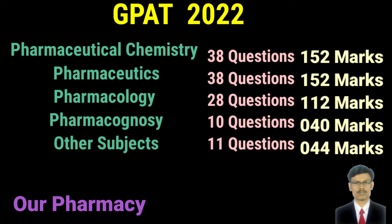Pharmacognosy: 10 questions, 40 marks. Pharmacology: 28 questions, 28 into 4 equals 112 marks. Other subjects — that includes Forensic Pharmacy, computer applications, and related areas — 11 questions, 44 marks.